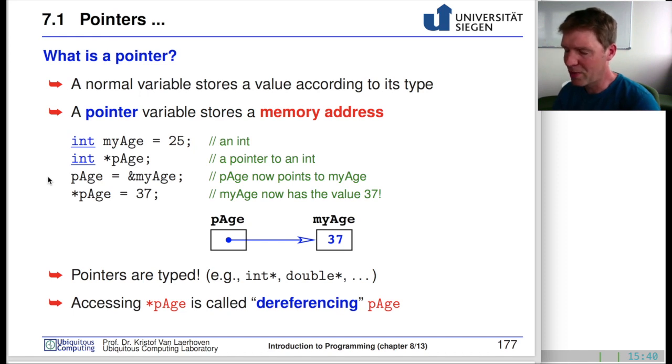A pointer is defined very similarly. The only difference is the star. We know that variable names can't start with a star - they can only start with letters or underscore. Numbers and other symbols are not allowed. The star is not part of the name. The name is actually pAge.